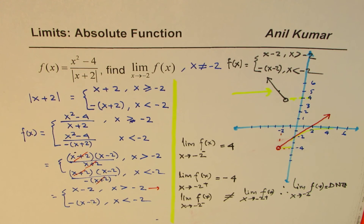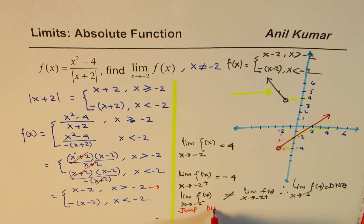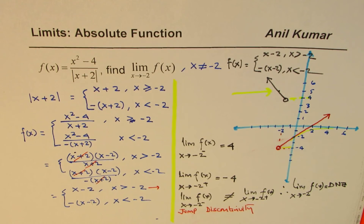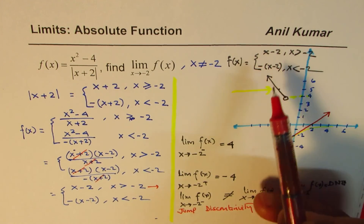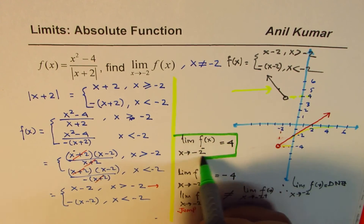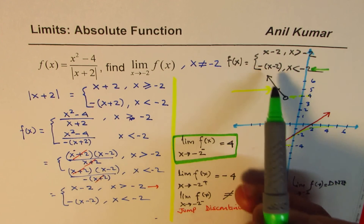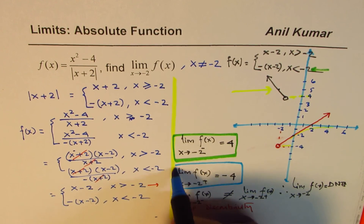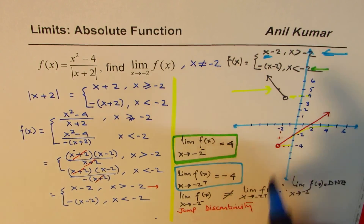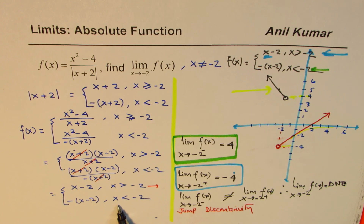As you can clearly see in the diagram, this is a jump discontinuity. We can confirm algebraically: substituting minus 2 into the left-side piece, negative of x minus 2, gives plus 4. Substituting minus 2 into the right-side piece, x minus 2, gives minus 4. You can verify either algebraically or from the graph, but you must first simplify and understand the expression before doing so.